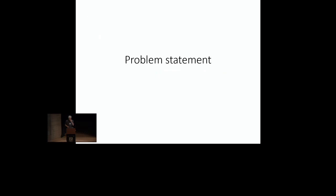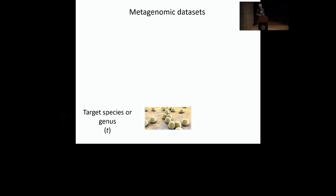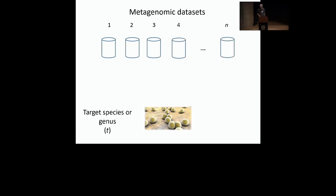I will show you some work I have been doing for the past few months. This is work in progress. The problem statement is quite simple: suppose you have a target species or genus, labeled by the letter T. This means basically some bacterial species or some archaeal species — some prokaryote, because we're talking about metagenomic datasets. Then we have a collection of metagenomic datasets, some number, and we want to ask: is the target species present in each of these datasets?